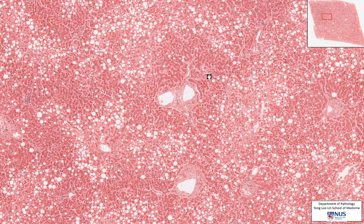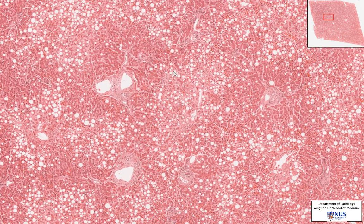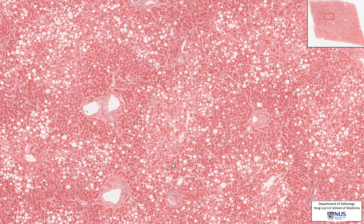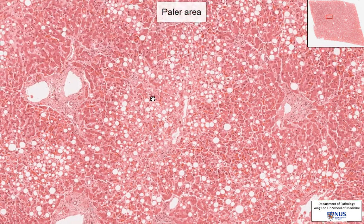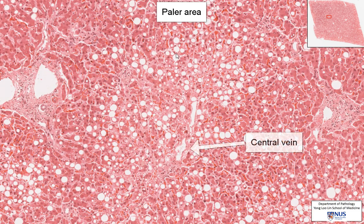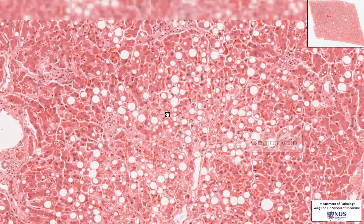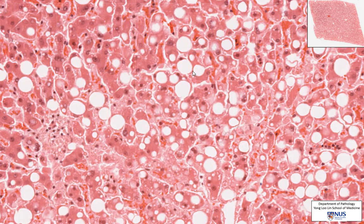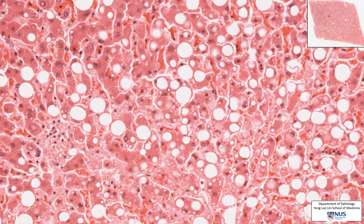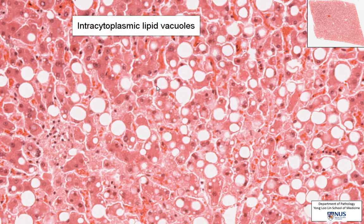Now let's zoom out and look at a pale area. Just adjacent to this, over here, there is a pale area. The reason why it is pale is because there are many of these empty appearing rounded holes. These holes actually used to contain lipid, and they are located within individual hepatocytes. You can see here that this specific hepatocyte is expanded by this rounded lipid vacuole.